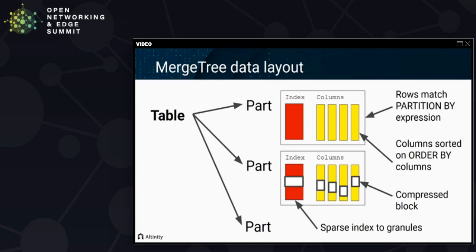When searching, we locate the granule we're interested in via the index, then go out to the columns and index into the compressed block that contains the data for that granule. You can also search for data directly without using the index, and ClickHouse is in fact very efficient at doing that as well.